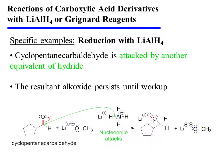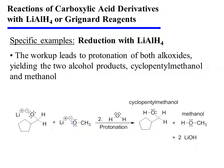Cyclopentane carbaldehyde is merely an intermediate because it is susceptible to reduction by lithium aluminum hydride. This occurs when another equivalent of hydride attacks the new aldehyde carbonyl carbon. Pi electrons are displaced onto oxygen, and the resultant alkoxide is a tetrahedral species with no good leaving groups, so it persists until workup. The workup leads to protonation of both alkoxides, yielding the two alcohol products: cyclopentyl methanol as well as methanol.